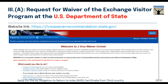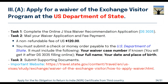Send the printed DS-3035 with supporting documents to the Department of State, and send one page containing your waiver case number to your Indian High Commission. I have provided the link and a screenshot of the US Department of State website. You must also mail your waiver application with a payment of 120 US dollars — submit a check or money order payable to the US Department of State, including your waiver case number, full name, and date and place of birth.